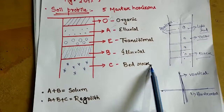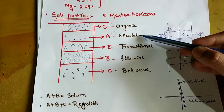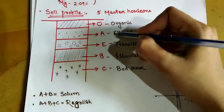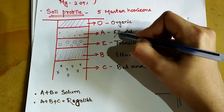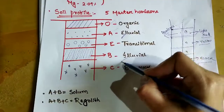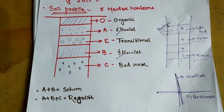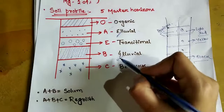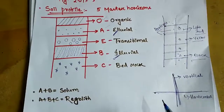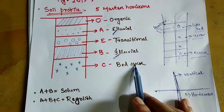You might be confused here: eluvial starts with E and illuvial starts with I. The A horizon is eluvial (E) and the B horizon is illuvial (I). So do not confuse them. Let us now discuss each horizon one by one.